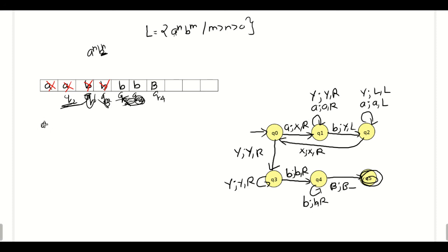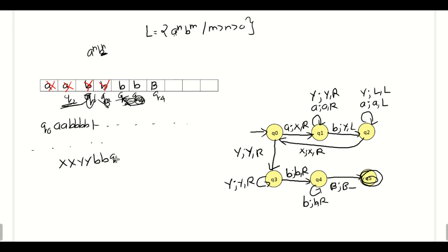For the instantaneous description, we start with q0 applied to the string aa bbbb. After processing all a's — replacing equal numbers of a's and b's — we end up with x x y y followed by bb and reach state q5. Since we replaced equal numbers of a's and b's and have two additional b's in the input string, the number of b's are greater than the number of a's, so the string belongs to the given language.